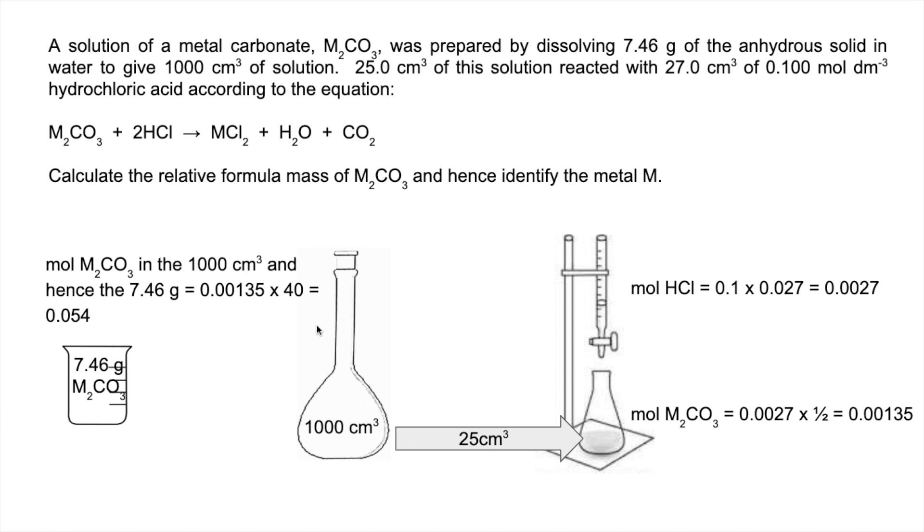Now we've got the moles in the 7.46 and we'll get the MR. That's 7.46 over the moles: 138.1. So now we've got the MR. If we subtract what we know, we know there's a C and 3 O's in there. The MR of the two M's is 138.1 minus the mass of CO₃, which is 60, so that's 78.1.